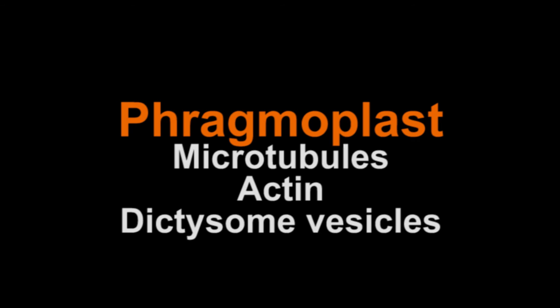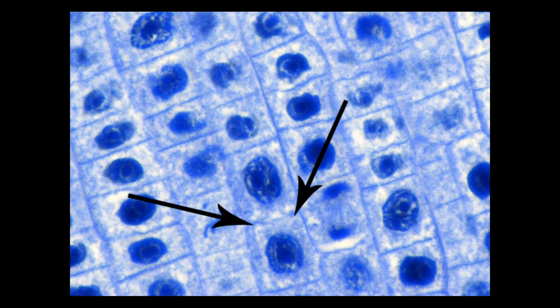The phragmoplast microtubules trap dictosome vesicles, which fuse into a large vesicle in the center of the cell. The structure grows outwards towards the original cell walls, and the new cell walls grow along its edges. The phragmoplast vesicle and the new cell walls are called the cell plate. Eventually, the cell plate reaches the original cell walls, the cell walls fuse together, and the vesicle membranes fuse with the original cell's plasma membrane.